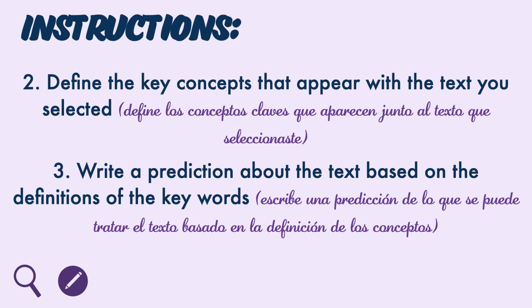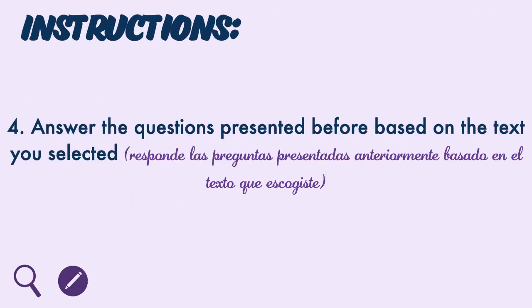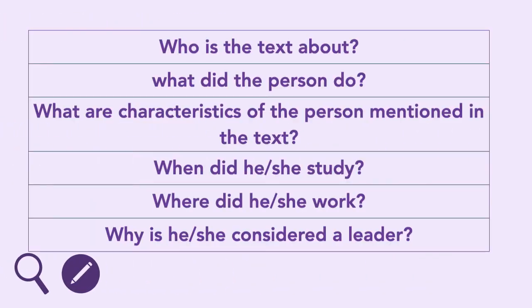Instruction number two: define the key concepts that appear with the text you have selected. Instruction number three: write a prediction about the text based on the definitions of the keywords. Instruction number four: answer the questions presented before based on the text you selected. Remember the questions: Who is the text about? What did the person do? What are characteristics of the person? When did he or she study?